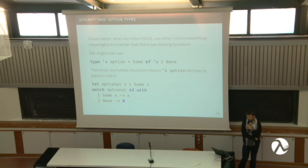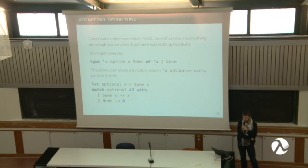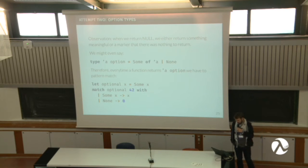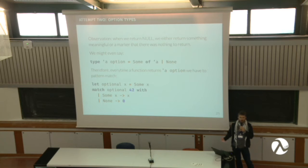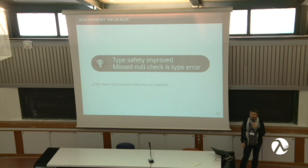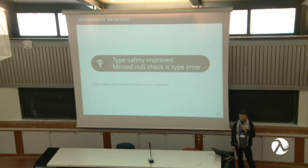For example, we have a function called 'optional' that takes an x and returns an option type of the same type. To get back our number, we do pattern matching: we match on 'optional 42', and if it's none we always return a valid value — in this case zero. We know that if something went wrong, we have to have a code path that handles it. And if we forget, it's a type error, because the compiler won't let you compile it — it says you tried to use type A, but it's of type option A. You cannot forget the pattern matching.